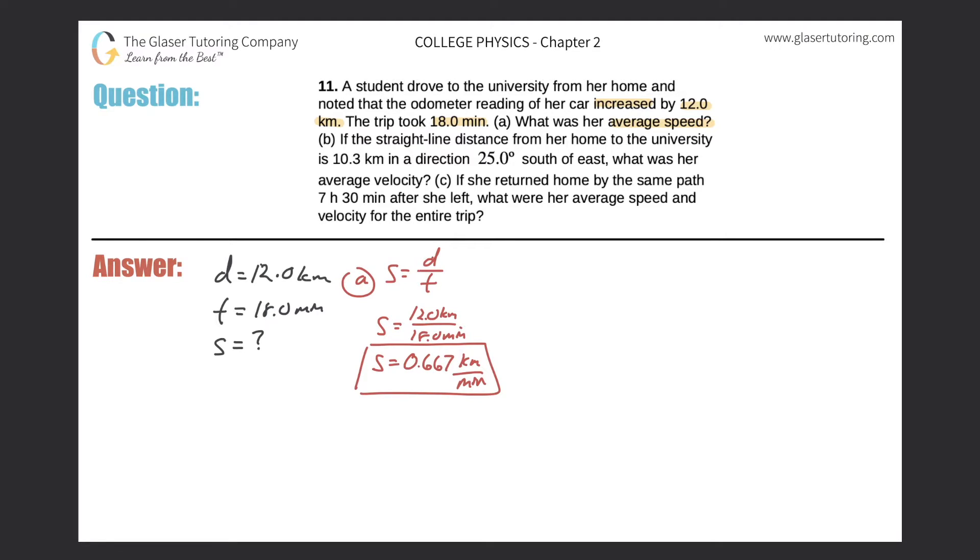Okay, let's move now on to part B. So it says, if the straight line distance from her home to the university is 10.3 kilometers in a direction of 25.0 degrees south of east, what was her average velocity? Okay, so this gets a little confusing, I think.